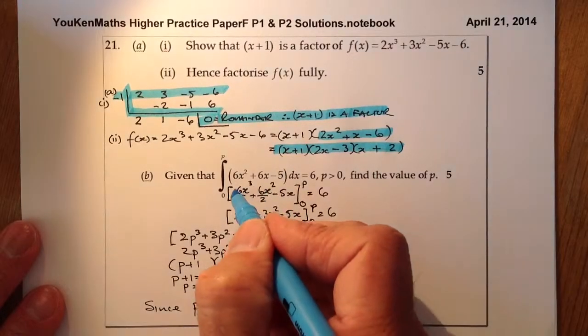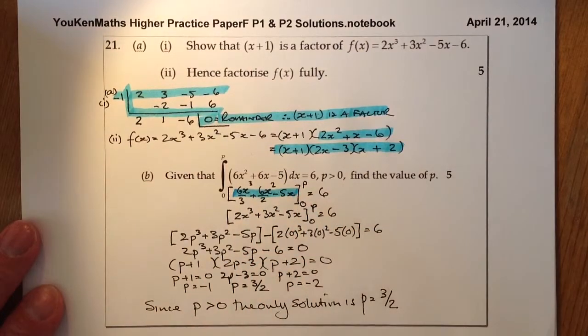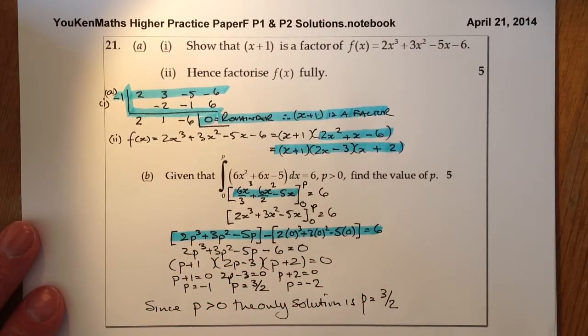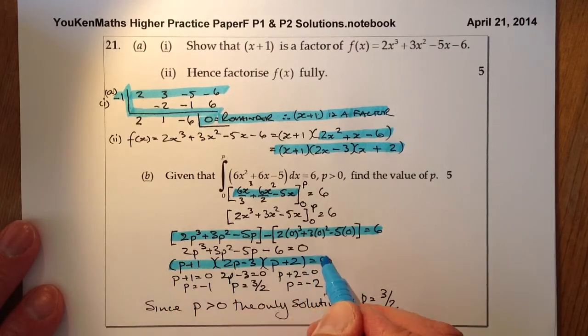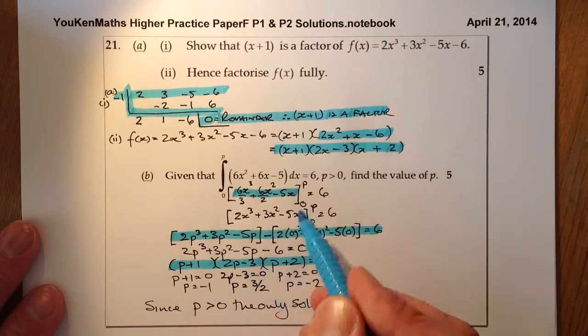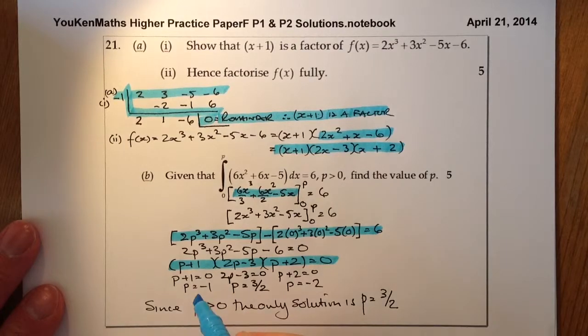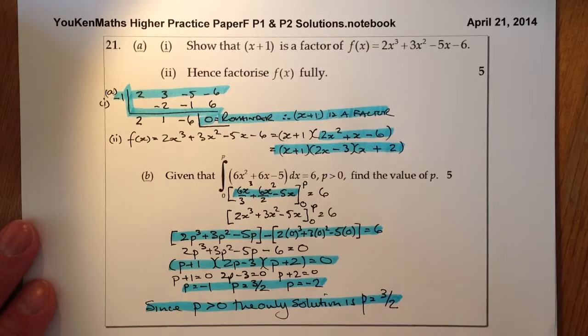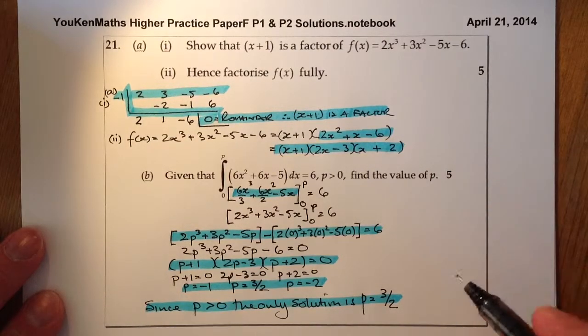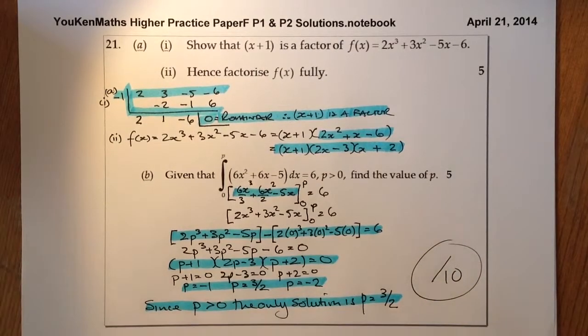For part B, one mark for integrating, one mark for substituting the values in, one mark for working through and replacing with the factorised form, one mark for all these values here, and the fifth mark for stating there's only one solution. So five marks for part A, five marks for part B, question out of ten. Thank you.